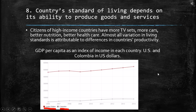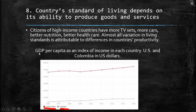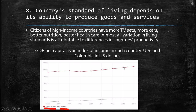The eighth principle is that a country's standard of living depends on its ability to produce goods and services. Citizens of high-income countries have more TVs, more cars, better nutrition, and better healthcare. Almost all variation in living standards is attributable to differences in countries' productivity. We can see this in a graph: when we look at GDP per capita — the total production of the country divided by each citizen — we can compare the United States and Colombia. Unfortunately for Colombia, the GDP per capita is about five times less than that of the United States, which is around $50,000, while Colombia is around $10,000. So we can see how production levels affect overall quality of life.